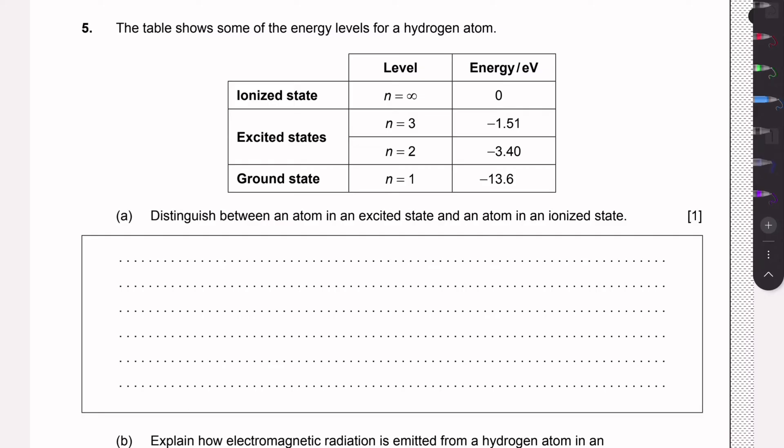Here we're given a table with some of the energy levels of a hydrogen atom, and part A wants us to determine the difference between an atom in an excited state and in an ionized state.